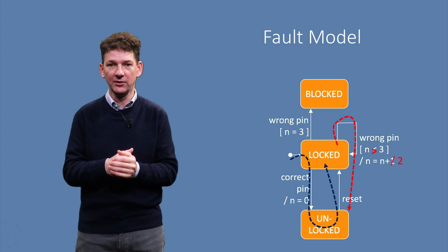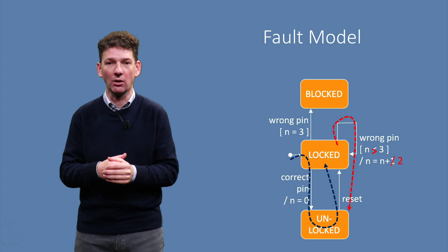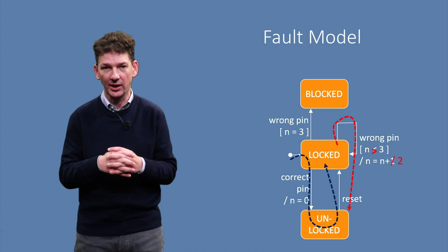If there is a wrong pin event, the state should either be locked or blocked, but not unlocked. The general fault here is that a transition leads to the wrong state.